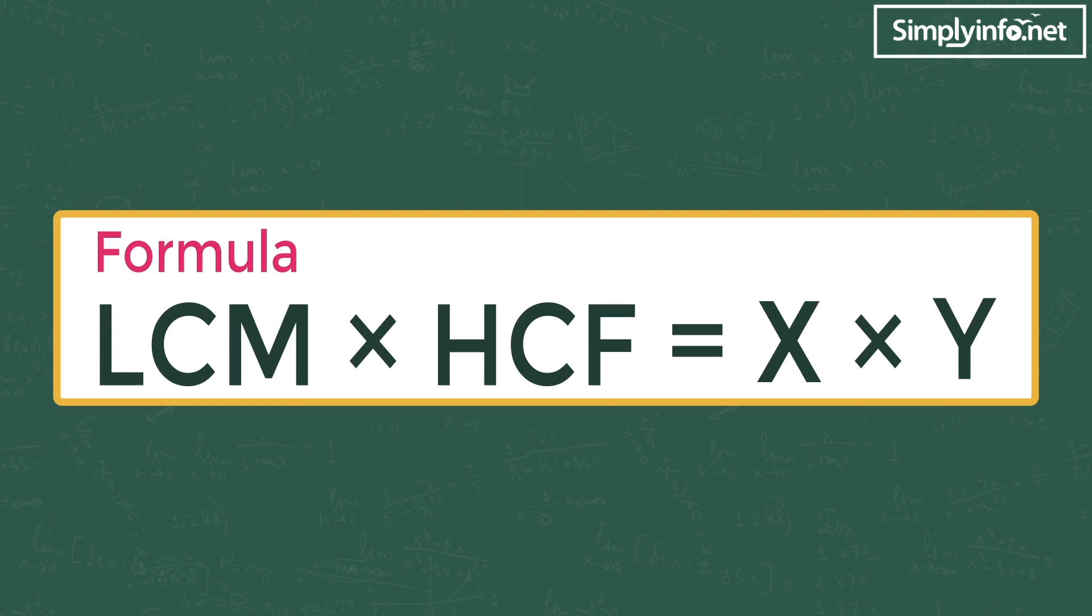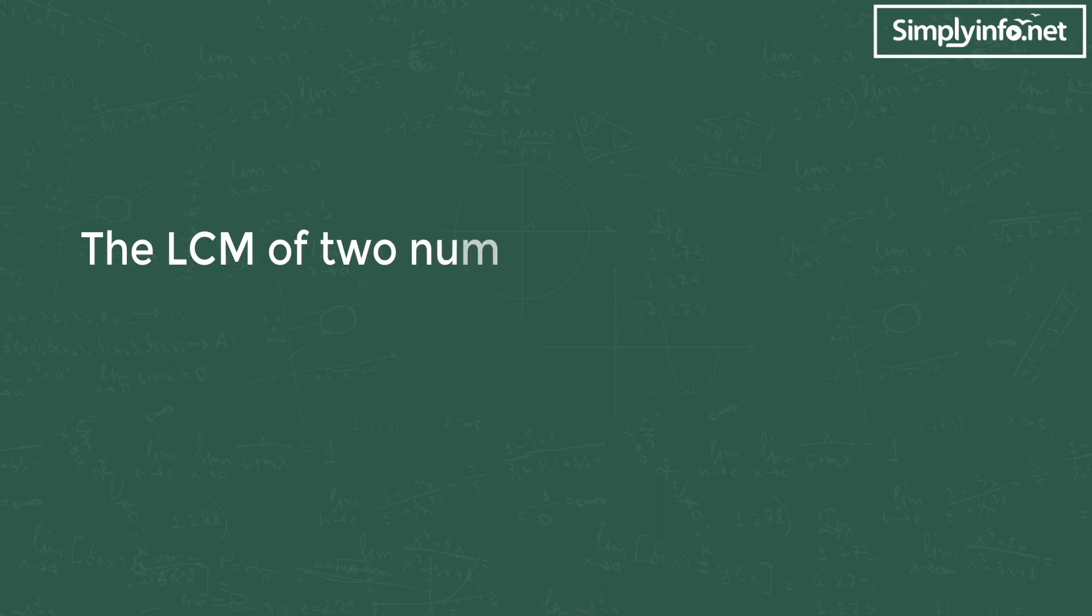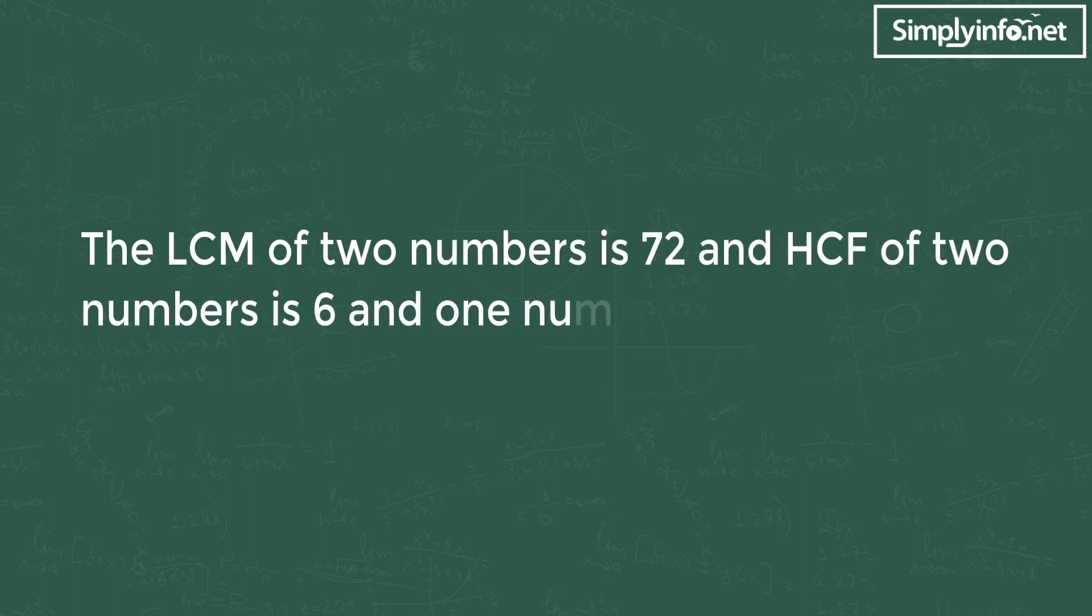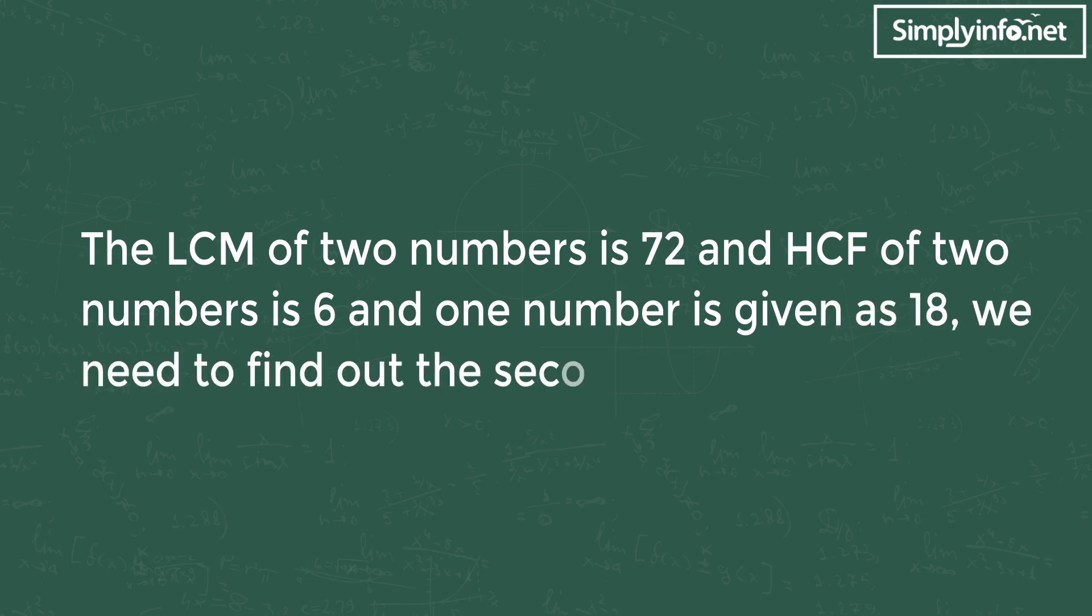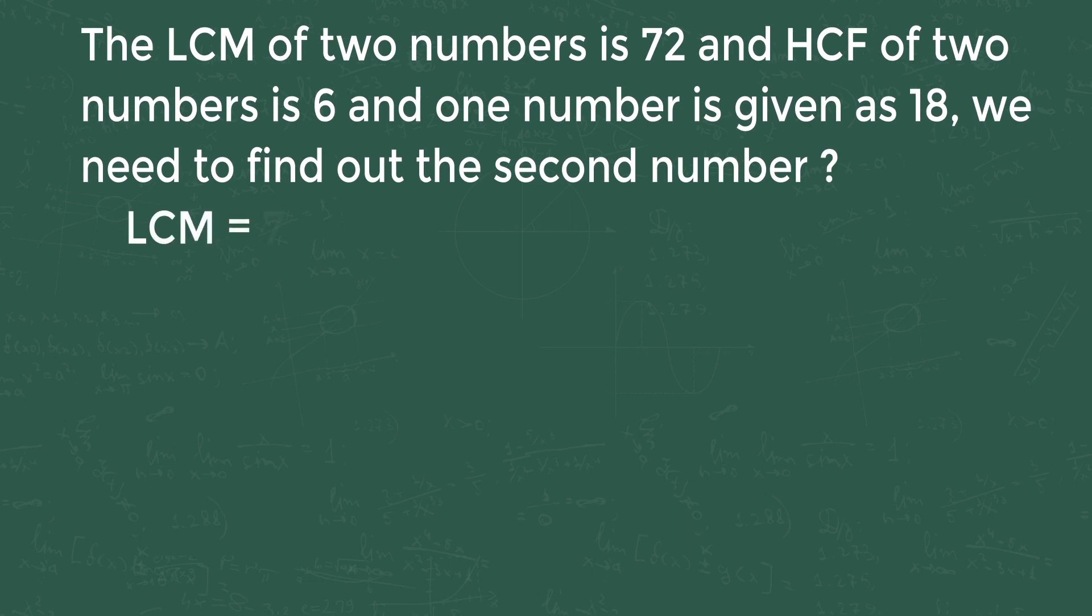Let's solve the problem below. The LCM of the two numbers is 72 and HCF of the two numbers is 6. One number is given as 18. We need to find out the second number.